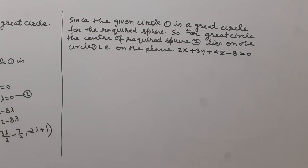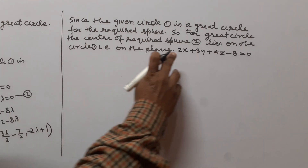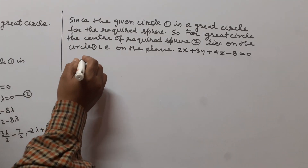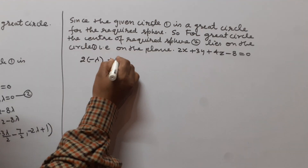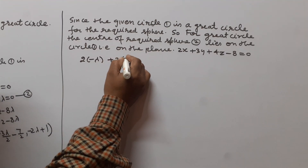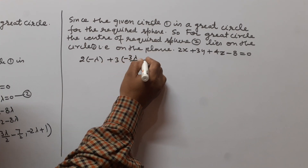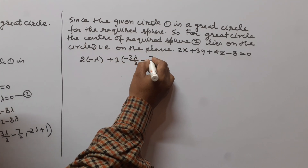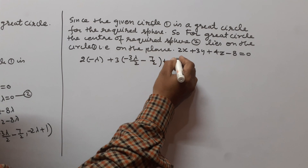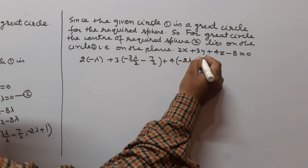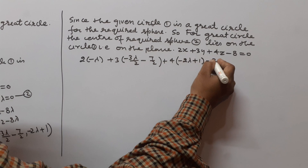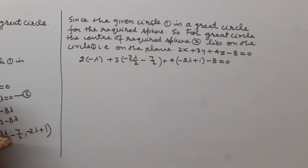We substitute the center coordinates into the plane equation. In place of x we put -λ, in place of y we put -3λ/2 - 7/2, and in place of z we put 1 - 2λ, then minus 8 equals 0.